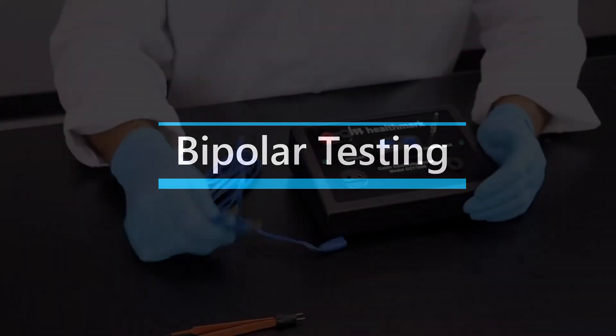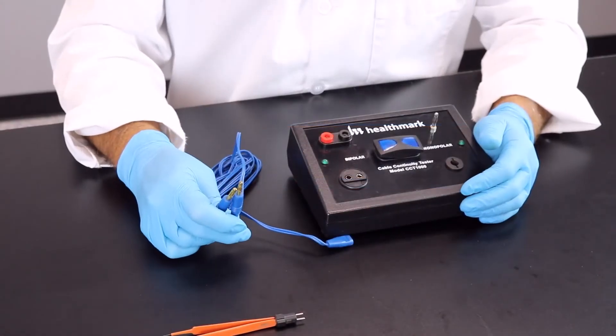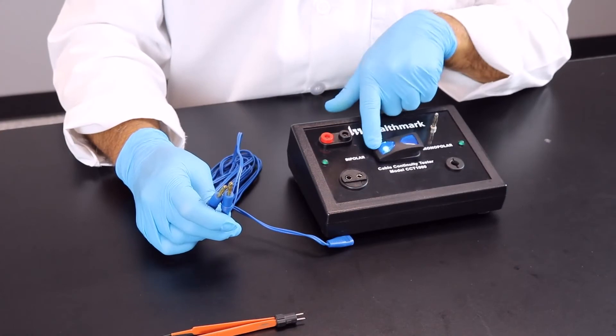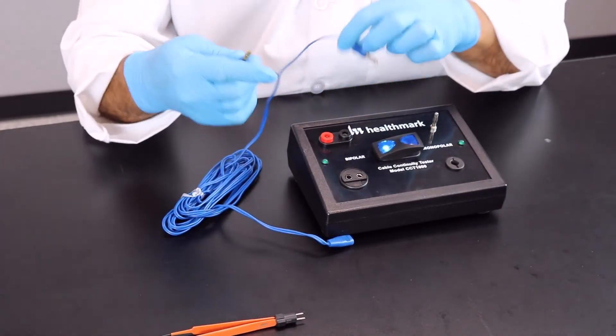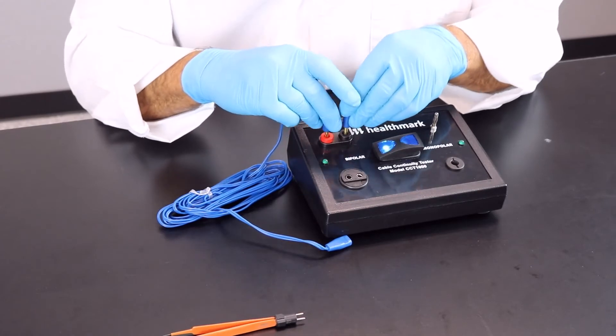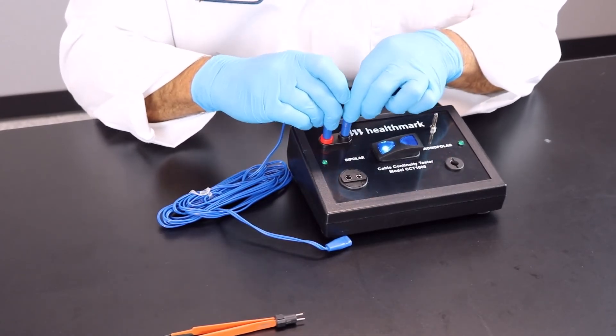So now we're going to show you how to test a bipolar cable. You're going to turn the toggle switch on to the bipolar wording there. You're going to hook up to the red and black and it doesn't matter which one that you put into the port.